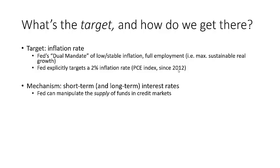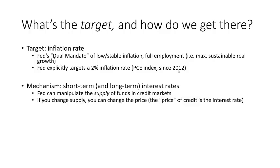The Fed can manipulate the supply of funds in credit markets. What does the Fed primarily do? It prints money or issues money in the form of reserves into the banking system. That can increase the supply of reserves that banks have to lend, putting downward pressure on interest rates. The Fed also has tools that can reduce the supply of reserves in the banking system, putting upward pressure on interest rates. It's basic supply and demand.